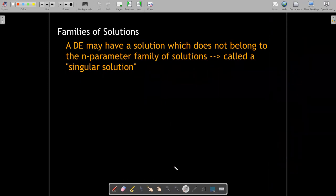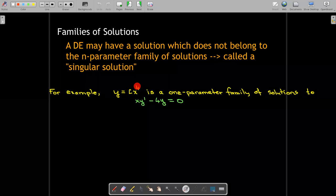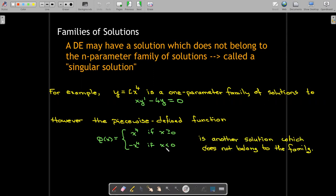Even if you have a family of solutions, there still could be other solutions to the differential equation which do not belong to the family of solutions. We call that a singular solution. Here's an example. We have a differential equation x times y prime minus 4y equals 0. We're told that a solution to that would be y equals c times x to the power 4. So, we could have any real value for c. So, you could have y equals x to the 4th, y equals negative x to the 4th. But you could also have a piecewise defined function like this. We have phi of x equals x to the 4th if x is greater than or equal to 0. And it's negative x to the 4th for negative values of x. This is also a solution and it does not belong to the one parameter family.